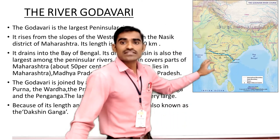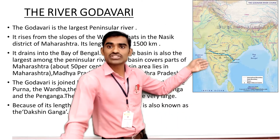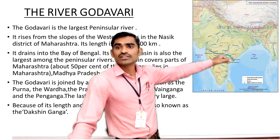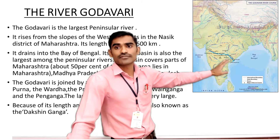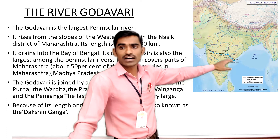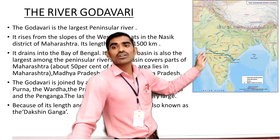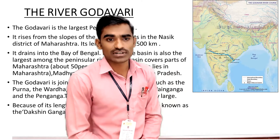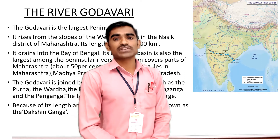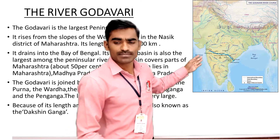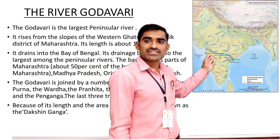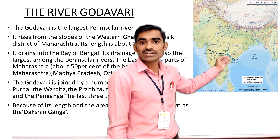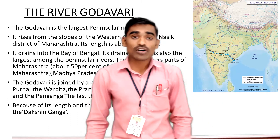The basin of Godavari River is shared by Maharashtra, Madhya Pradesh, Chhattisgarh, Odisha, Karnataka, Andhra Pradesh, and Telangana. All these states come under the basin of the Godavari River. There are so many tributaries of the Godavari River which come and meet it from many states — almost each state contributes one small river that comes and meets the Godavari River.